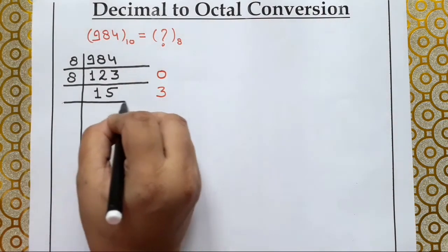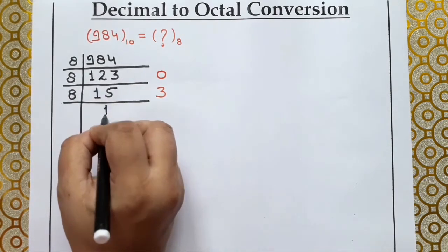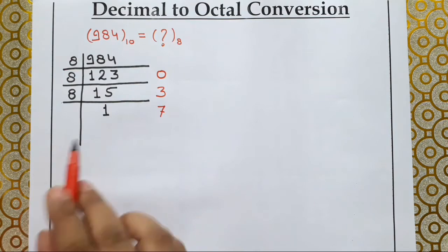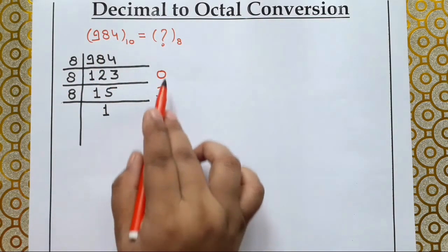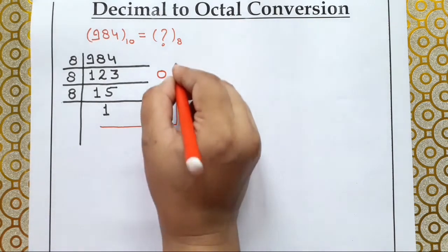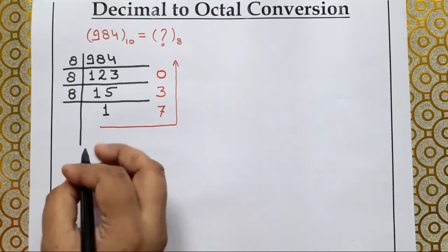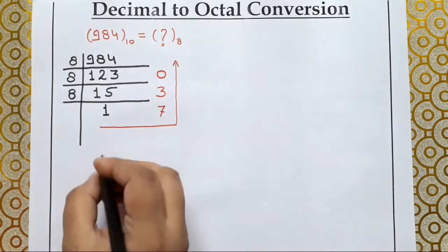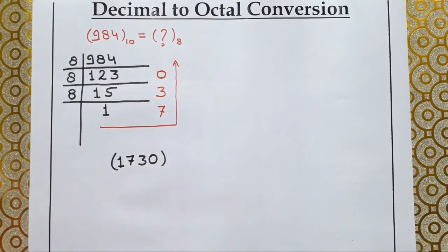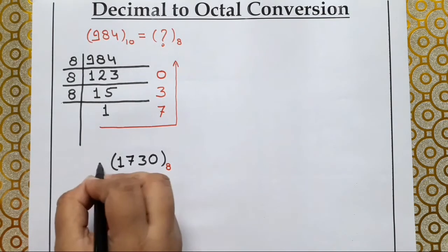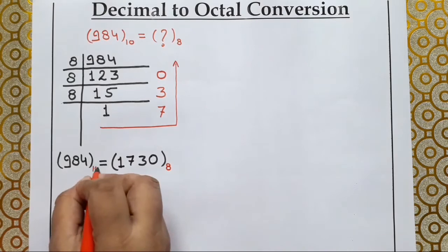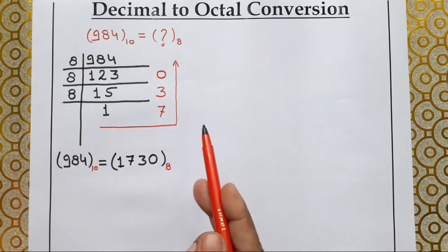Again we divide this number by 8: 8×1=8 and the remainder left is 7. So the equivalent octal number of the decimal number 984 has been found. As we know, the method to write the answer in decimal-to-binary is from bottom to top, so the answer becomes 1, 7, 3, 0. We write 1730 — this is an octal number so its base is 8, and it is equivalent to 984, which was our decimal number. This was the method to convert a decimal number to an octal number.